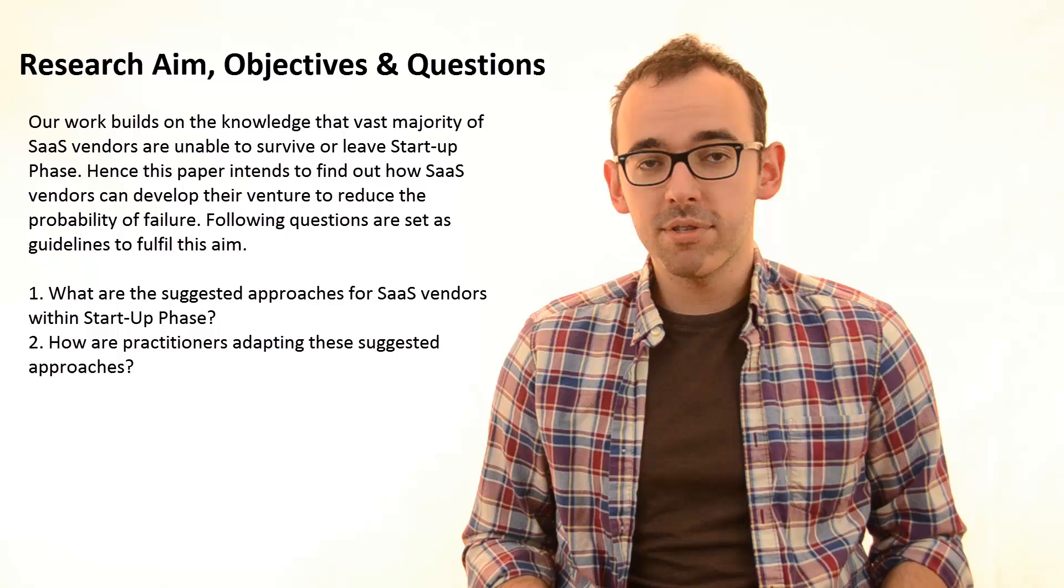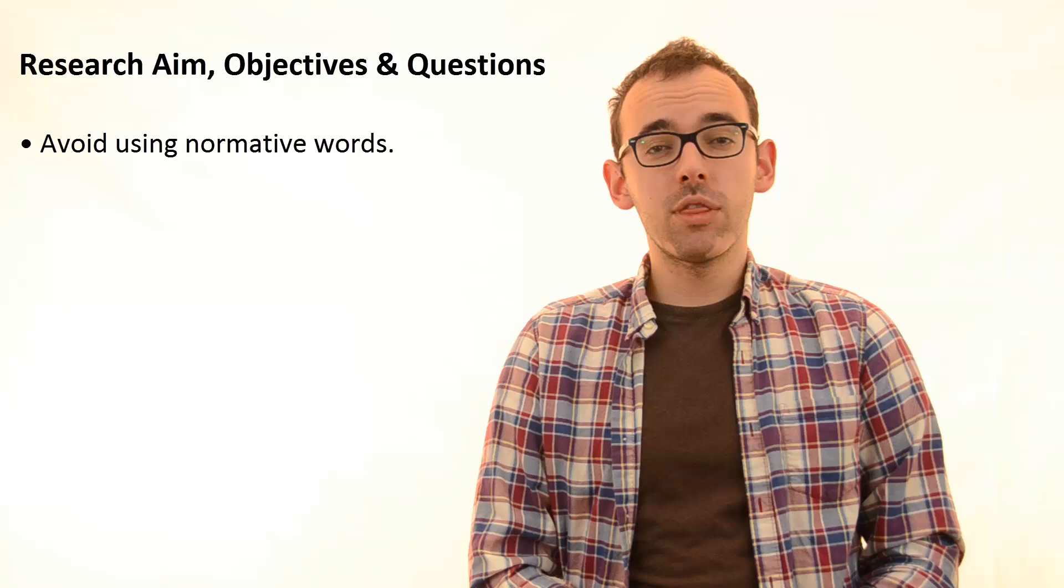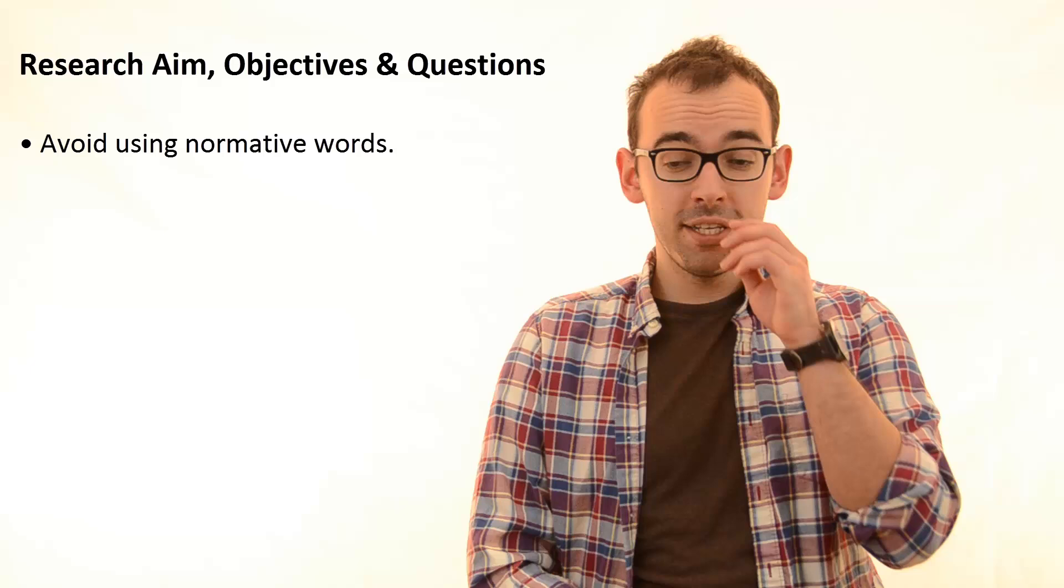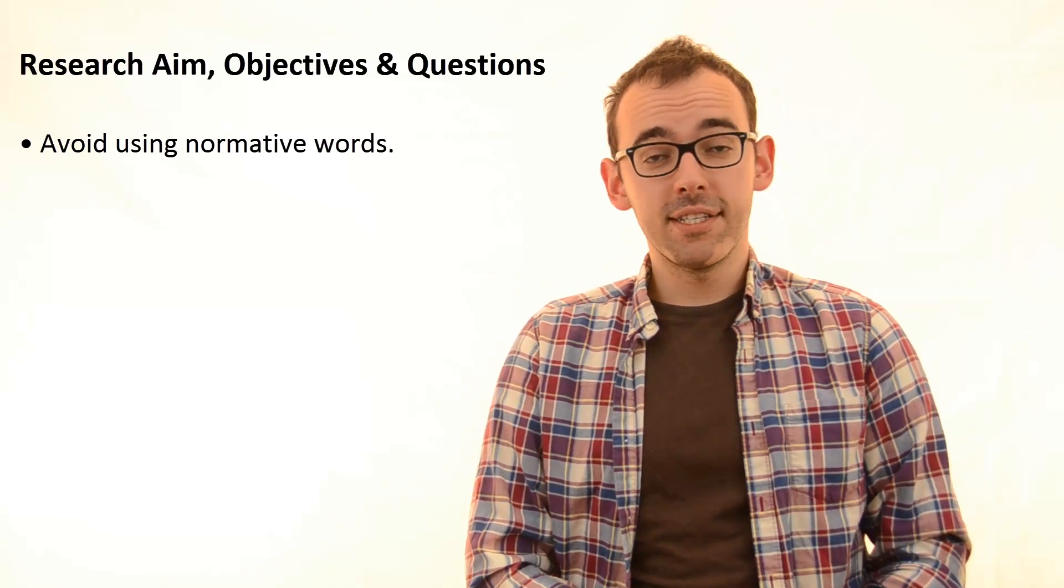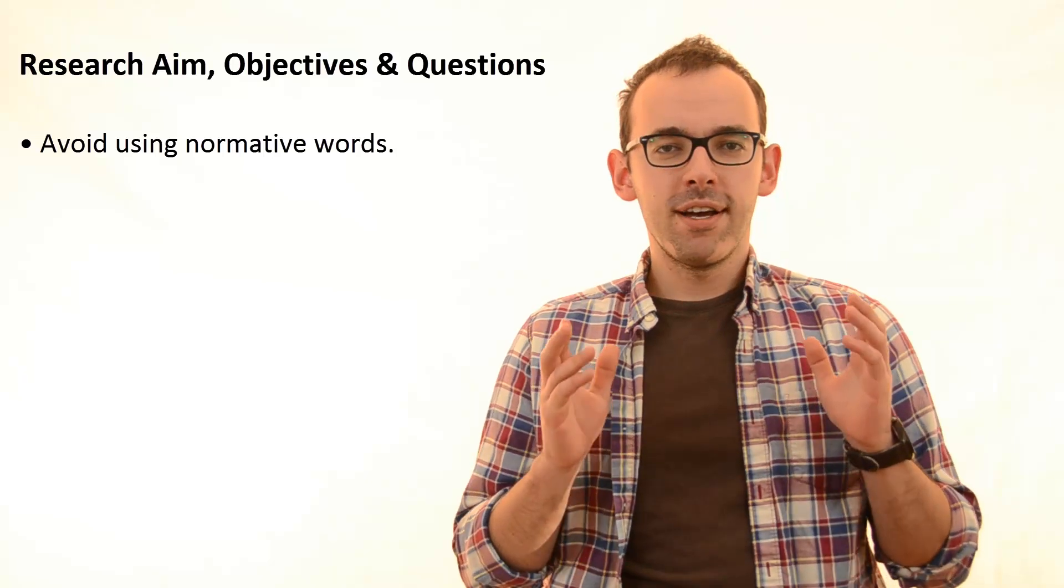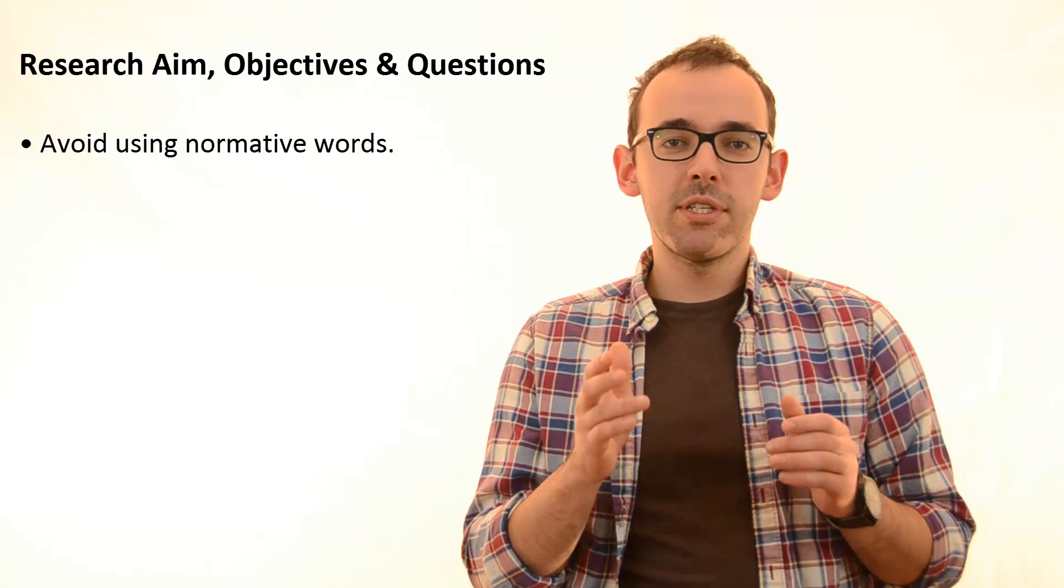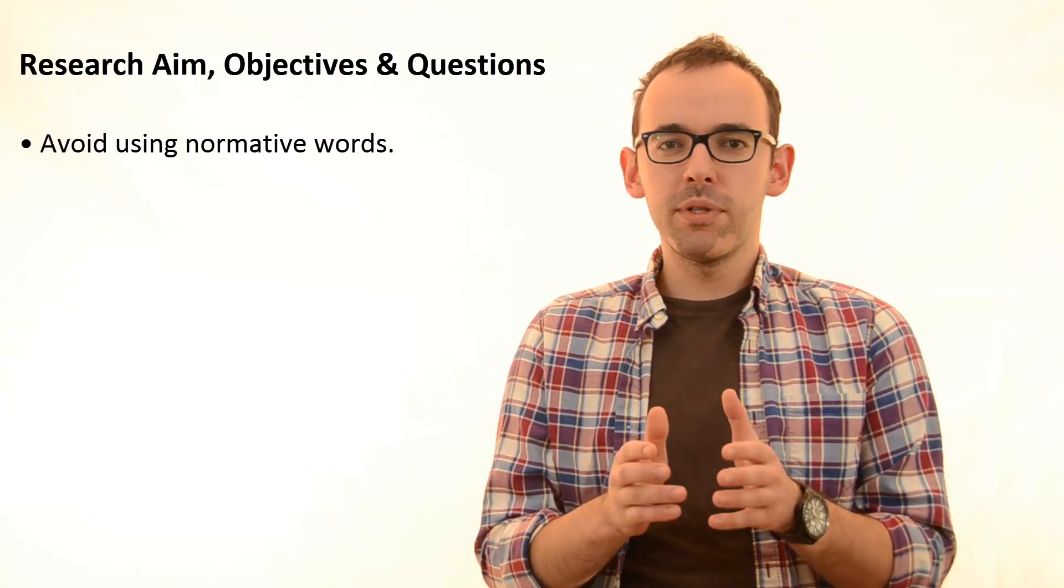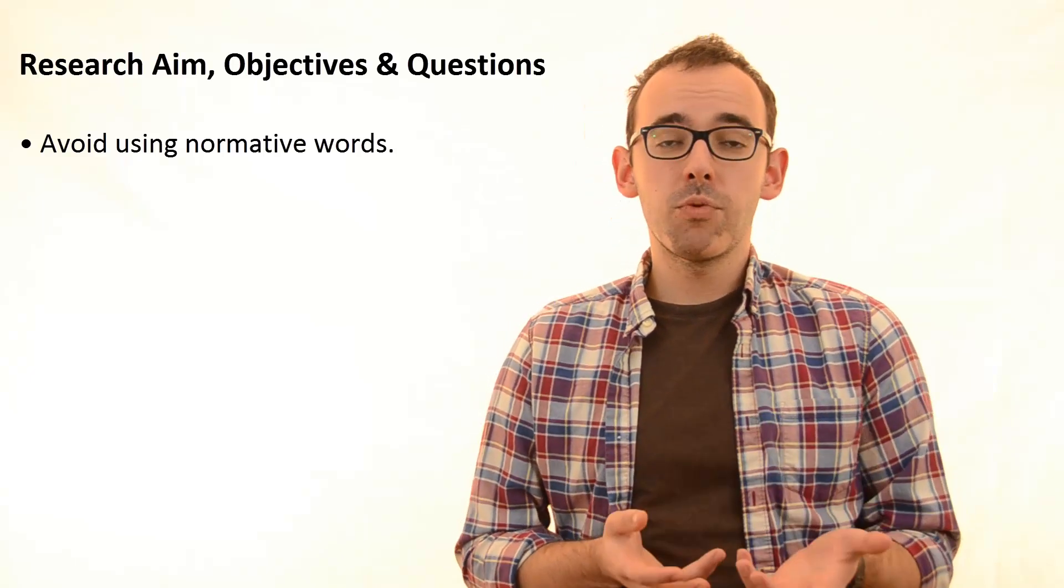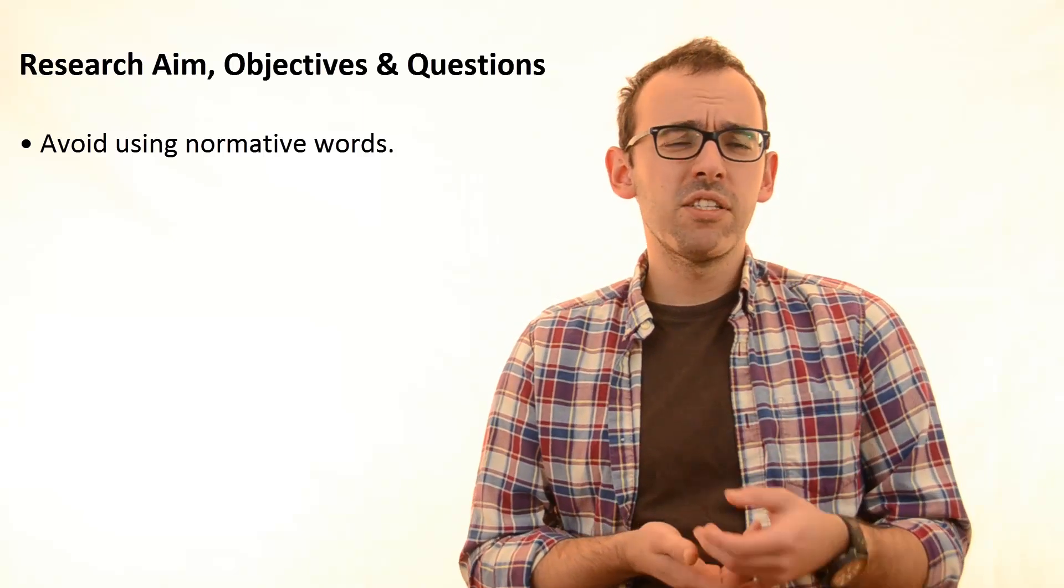And now let's get to some other advice that I have for you when it comes to writing a research aim. First of all, don't use what we call normative words or normative phrases. The two most used ones are success and failure. Maybe you would like to write your research aim in a way like: The aim of this paper is to discover how these companies can achieve success and avoid failure. You just cannot write it this way because it is too vague and not justified.